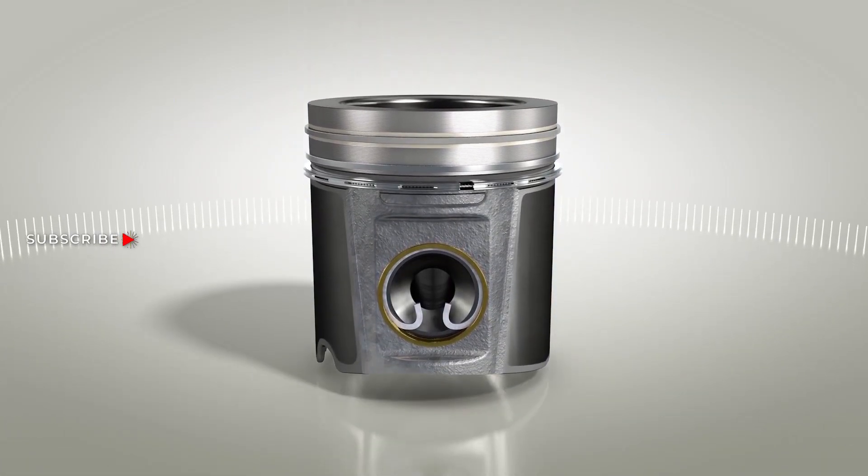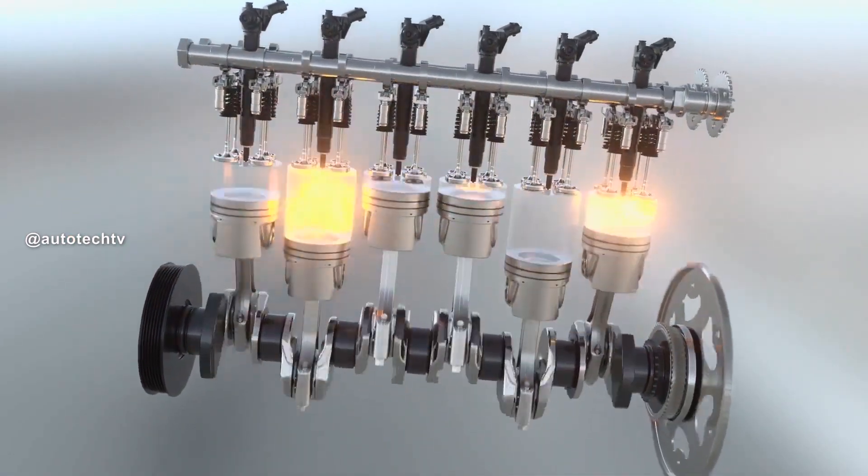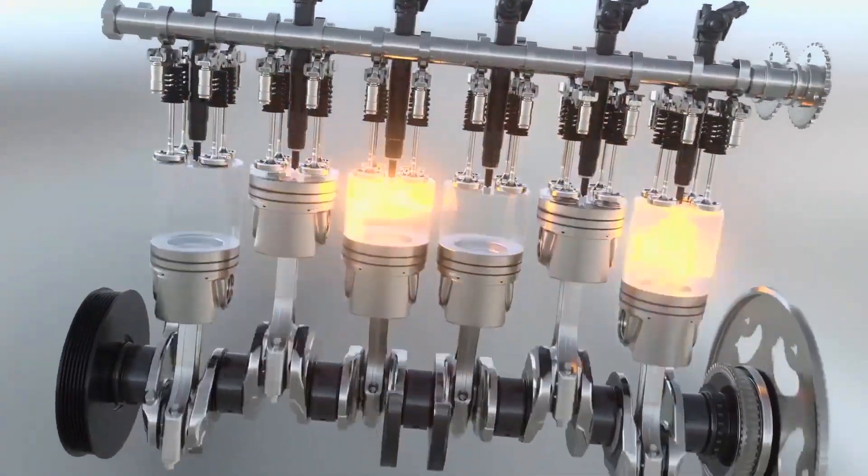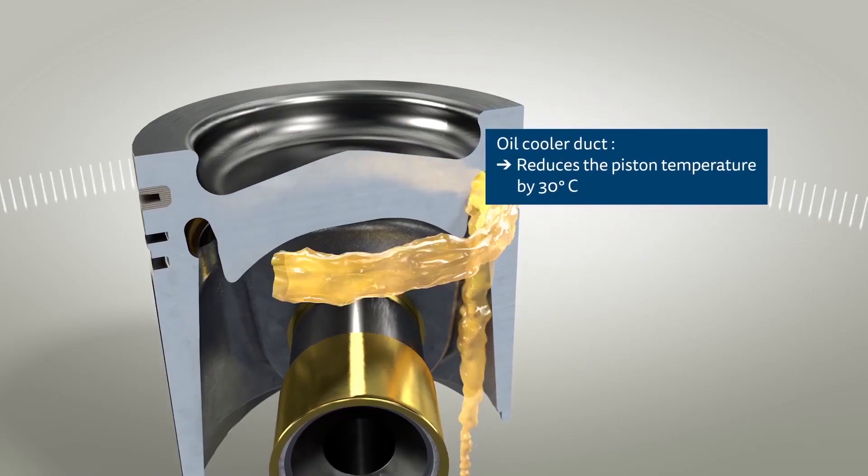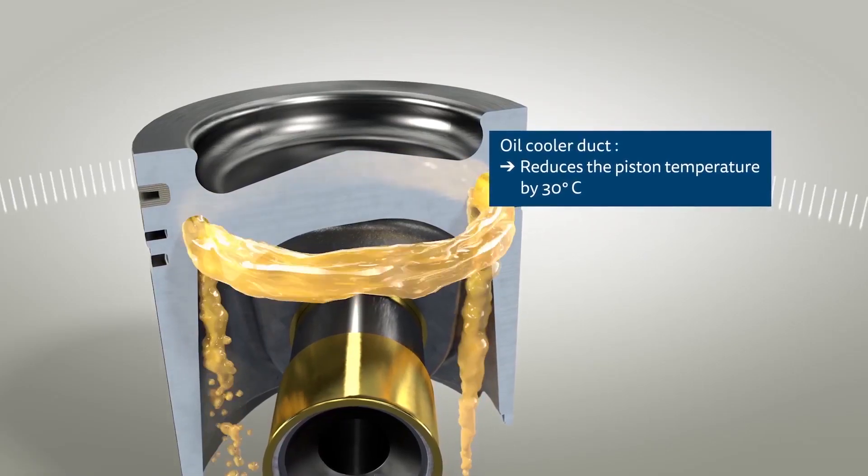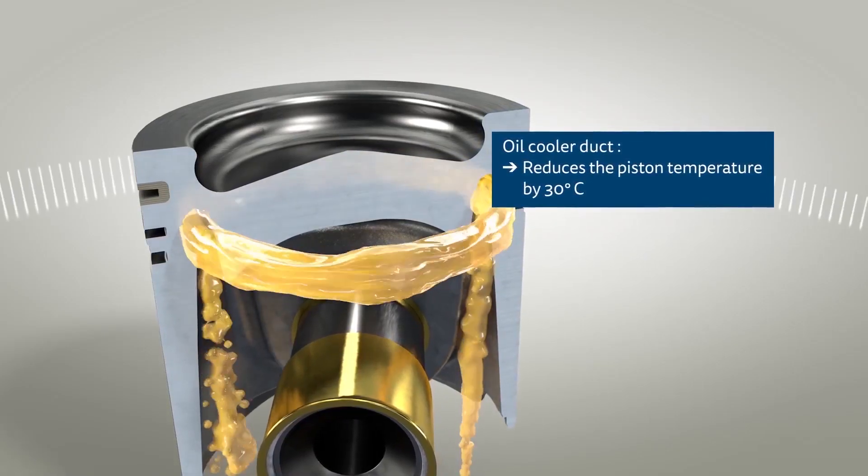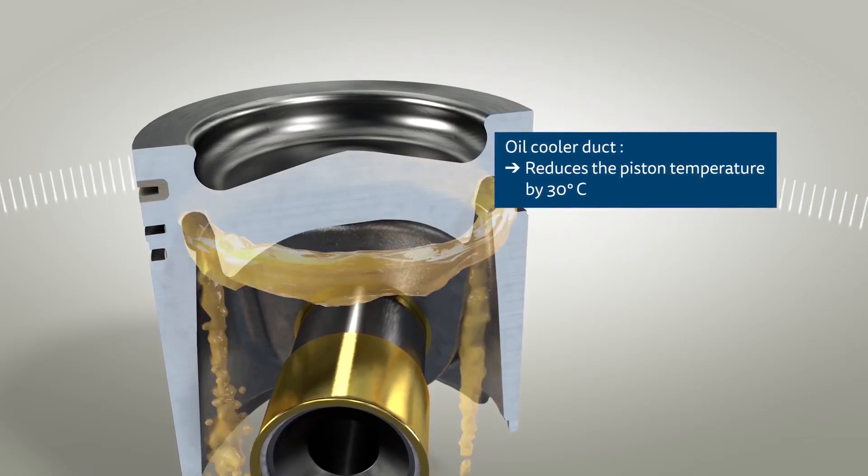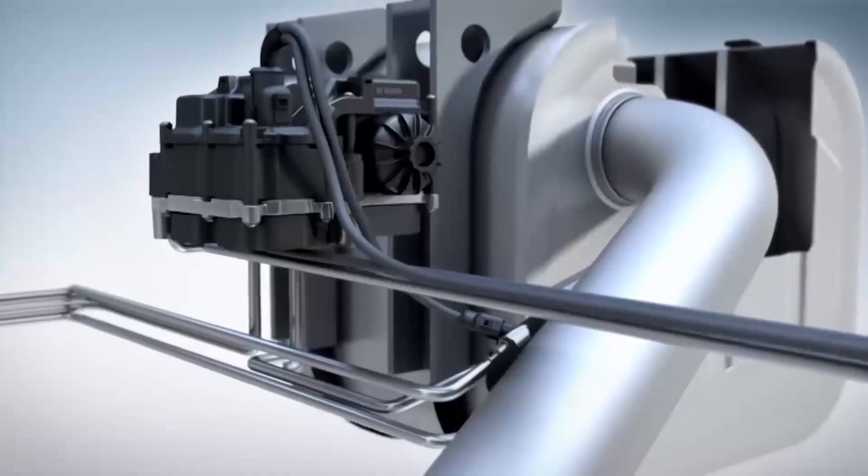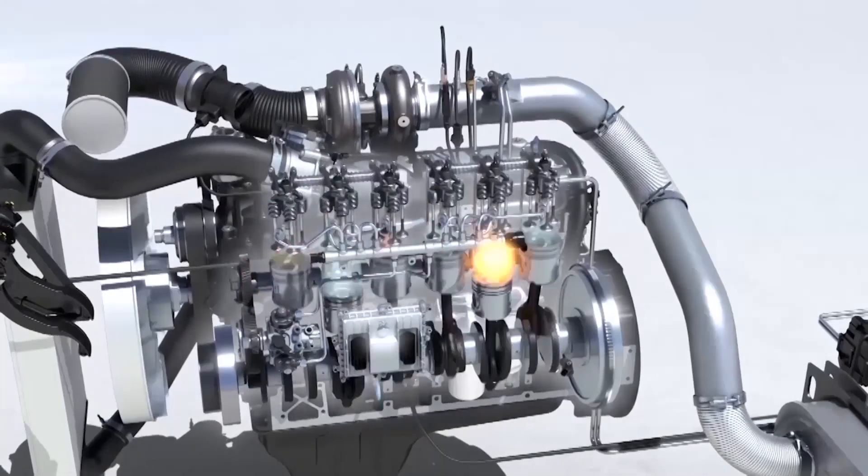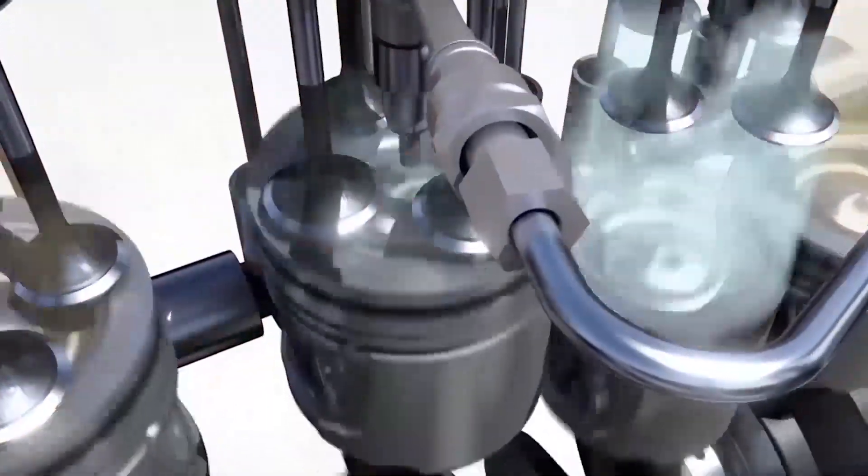An interesting question is: how is it cooled? Water doesn't get to it, the cooling circuit doesn't get to it. How is it cooled? With oil. Almost all diesel engines have an oil injector in the base that's connected to the block that injects a stream of oil through an oil cooler duct.